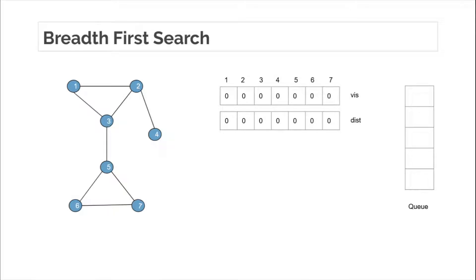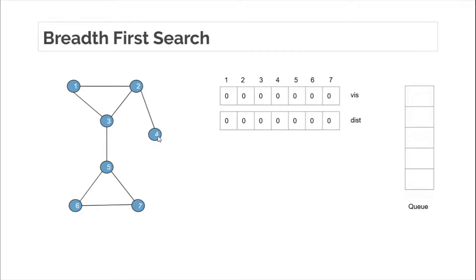If 3 is the root, then 3 is at distance 0 from the root node, so 3 is at level 0. Nodes 1, 2, and 5 are at level 1 because all three are at distance 1 from the root node, which is 3 in this case. Nodes 6, 7, and 4 are at distance 2 from the root node, so these three nodes are at level 2.